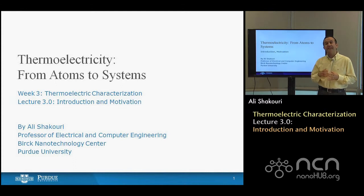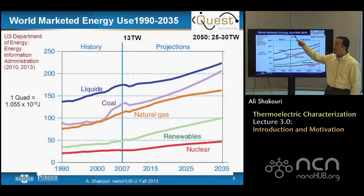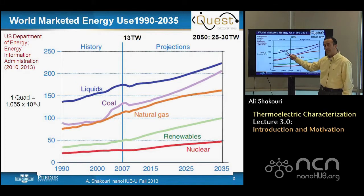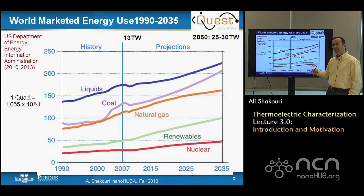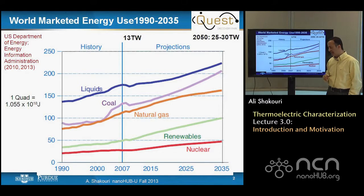I wanted to provide a little more background information. There is a lot of interest in areas related to energy. This is a graph that shows the world marketed energy use between 1990 to 2035, from a report that came out in 2010. What you see is liquids, petroleum, coal, natural gas, renewables, and nuclear. While we're talking a lot about increasing renewables and low-carbon energy sources, the use of liquids, coal, and natural gas are not coming down.